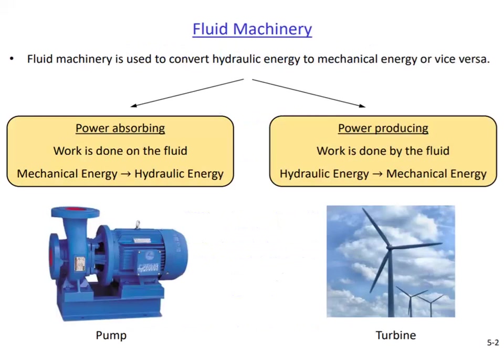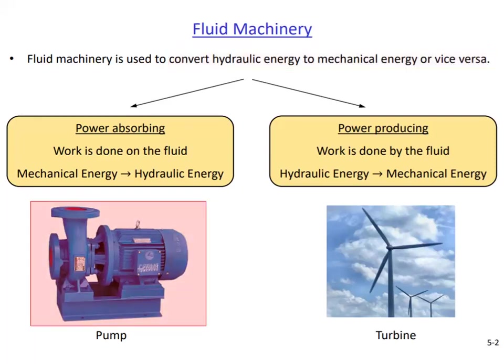Fluid machinery is a general term we use for devices that convert hydraulic energy to mechanical energy or vice versa. Hydraulic energy stored in a fluid can be in the form of elevation, pressure, or speed. Mechanical energy, on the other hand, can be a moving piston or maybe a rotating shaft. The pump you see here is a power absorbing device — fluid gets energized as it goes inside it.